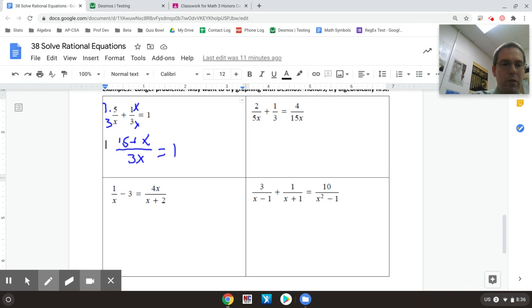Now remember, like we did in the last video, I could rewrite 1 as a fraction, as 1 over 1. So now I could just cross-multiply. I can do 15 plus x times 1 is 15 plus x, or you could write it as x plus 15 if you wanted to. And then 3x times 1 is 3x.